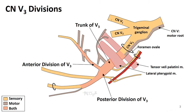The motor root and V3 pass through the foramen ovale, and then immediately inferior to the foramen ovale, V3 courses between the tensor veli palatini muscle and the lateral pterygoid muscle.